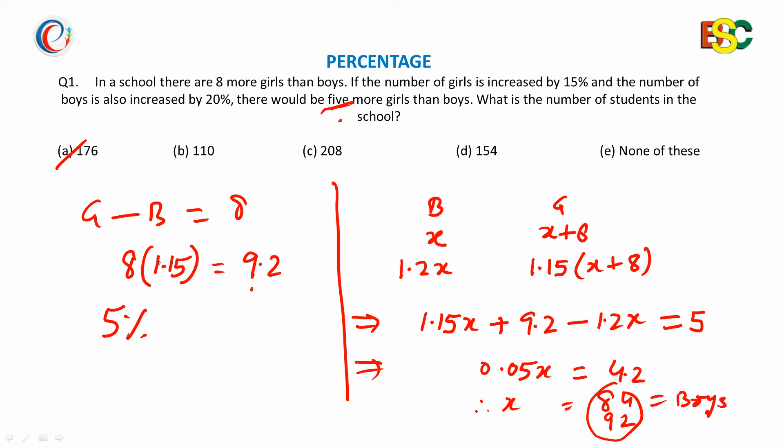We have considered 15% here. 5% of number of boys is equivalent to 9.2 minus 5, which is equivalent to 4.2.